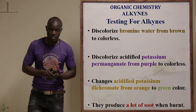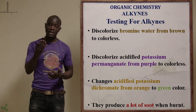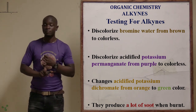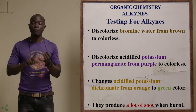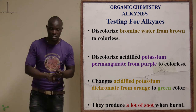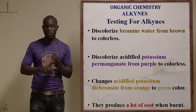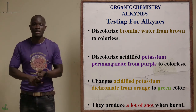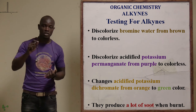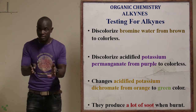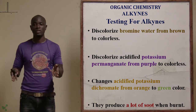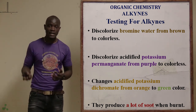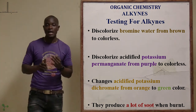How do you test for alkynes? Since alkynes are unsaturated hydrocarbons, they discolorize bromine water, potassium permanganate, and potassium dichromate. When heated, they produce a lot of soot — more soot than alkenes. These are the main tests used to confirm the presence of alkynes: discolorizing bromine water, potassium permanganate, or potassium dichromate, and producing a lot of soot when burnt.